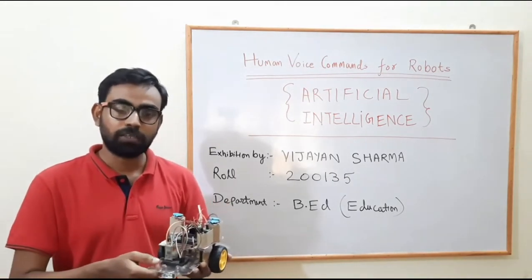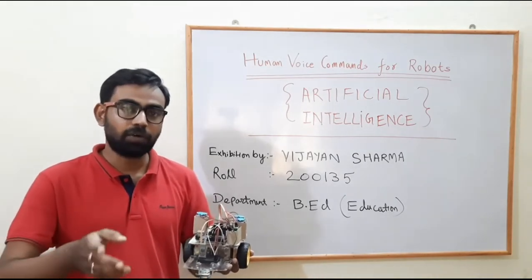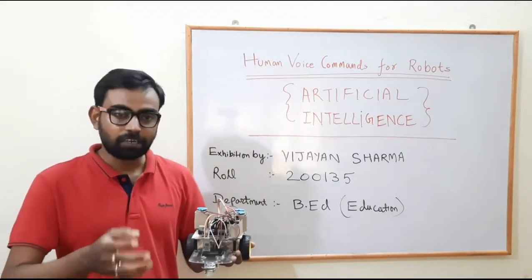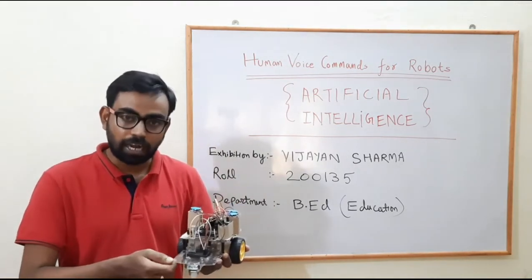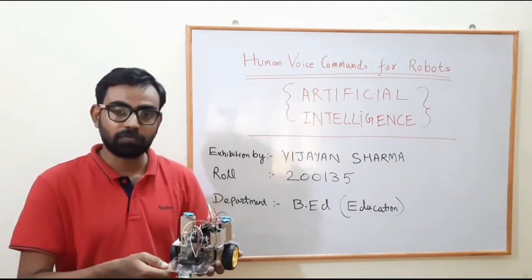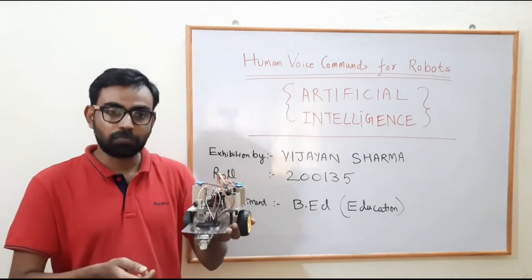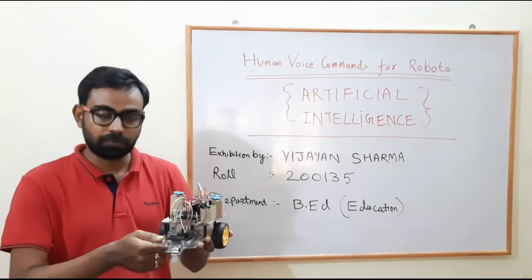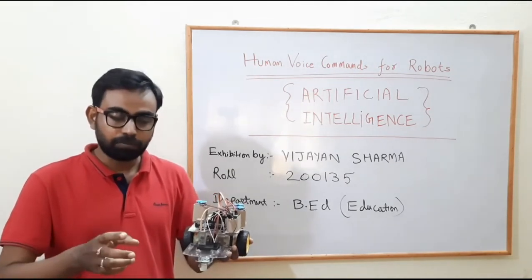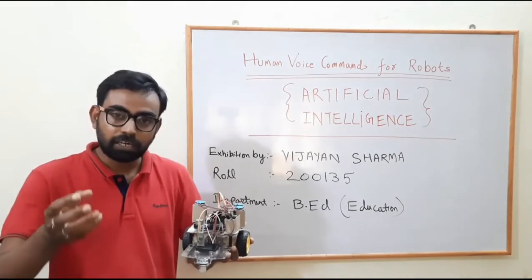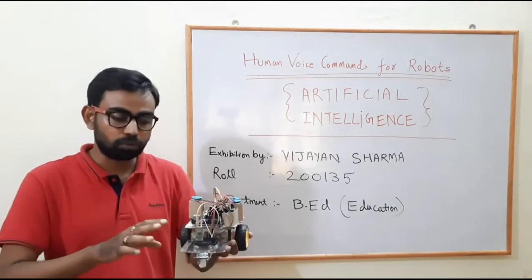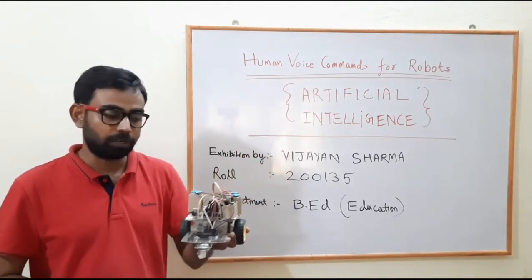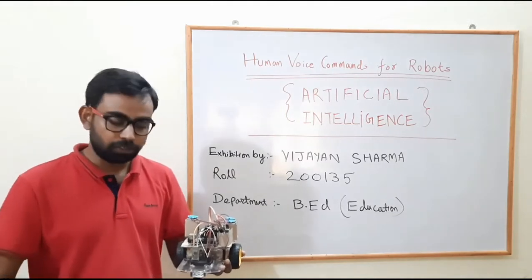Whatever command I give to the robot, the robot will follow that command — if I say forward it will go forward, if I say backward it will go backward, similarly for left and right. This kind of implementation on hardware where the hardware follows human voice commands is an application of Artificial Intelligence. In the upcoming part of this video I will show you the working of this model. The Android app on my phone will be connected to this robot using a Bluetooth module.